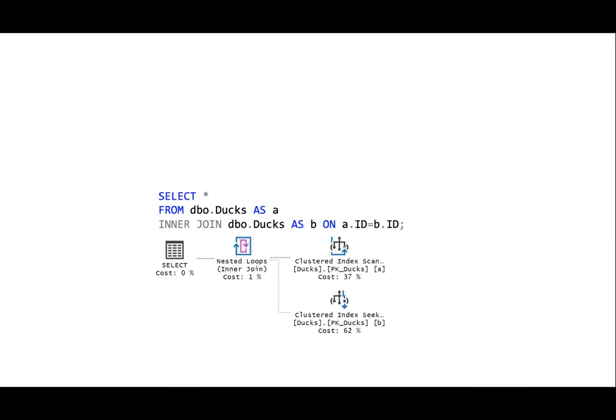An important point: we're pulling rows in the order of this index, so we're preserving the order of this index. If we're doing a clustered index scan on Ducks sorted by id, the result set will still be sorted by id. This is useful and important to keep track of when performance tuning your queries. If you want to ORDER BY id, it's already done for you right there.